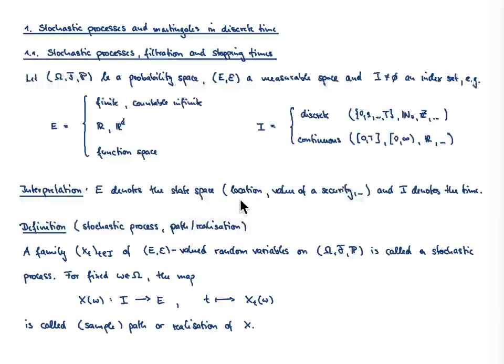The state space could be something like locations, the value of a security, or the temperature. The index set I, on the other hand, represents the time of our stochastic process.